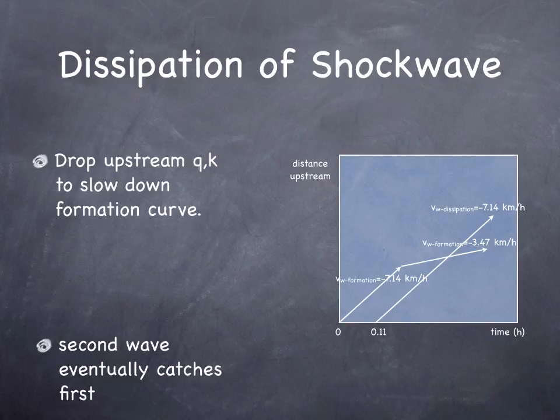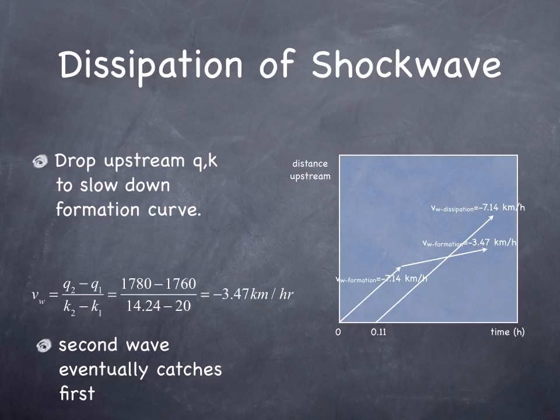Or we could drop the upstream Q and K, so another possibility for the shock wave is to dissipate, because not as many vehicles are arriving. So a sustained demand over capacity is unfeasible. It can't be over capacity forever, or the queue would grow on forever. It can do that for a finite period of time, but usually well less than a day, and usually well less than half a day. So at some point, the Q upstream will drop, and at that point, the second wave will eventually catch the first wave because the formation wave slows down if the upstream flow is slower. If the upstream flow falls below the downstream capacity, then the wave dissipates.